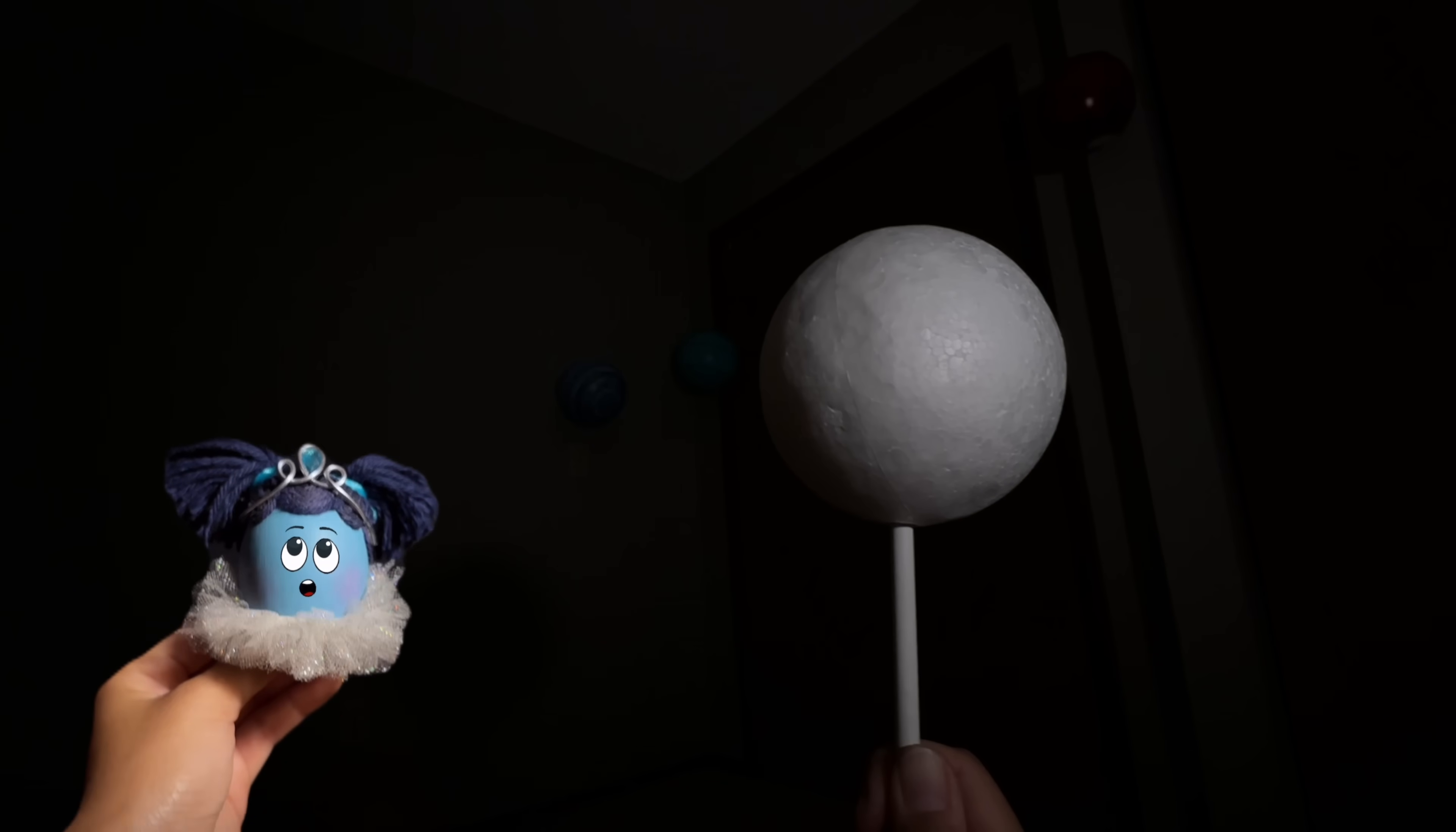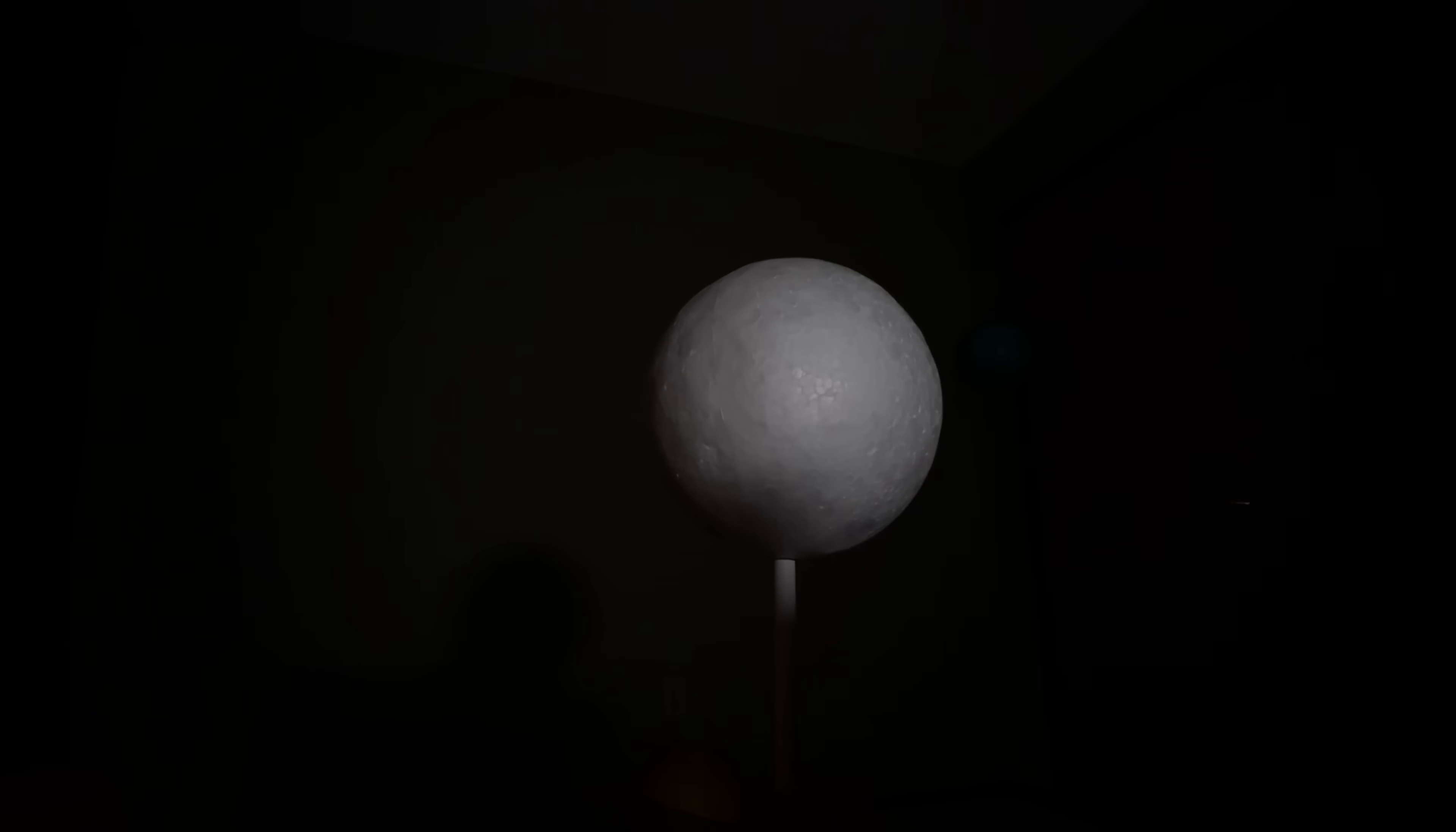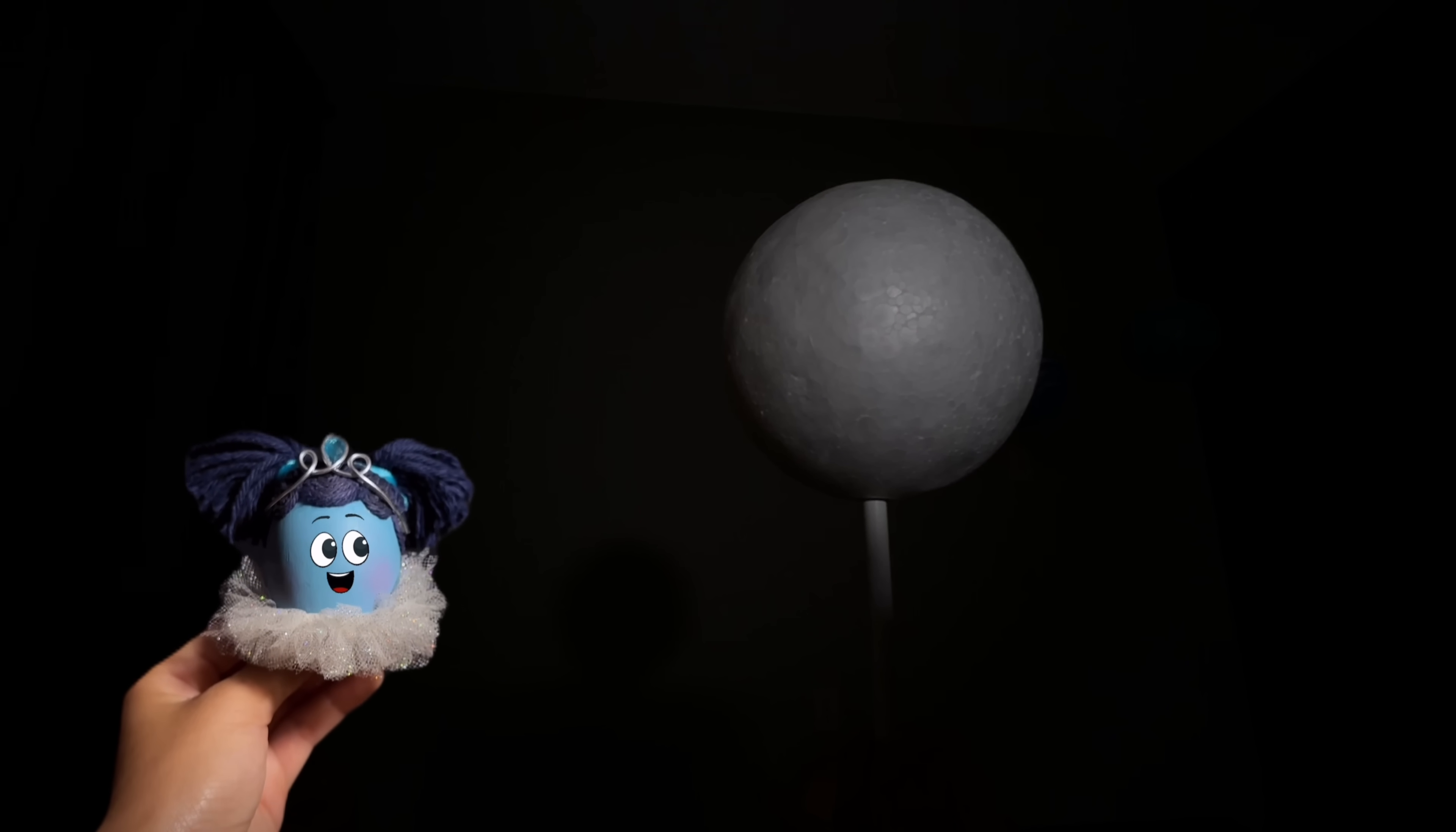Now, when it's almost a full circle, it's called the gibbous moon. And finally, halfway through its orbit, the moon becomes a full moon, where you can see the whole circle.